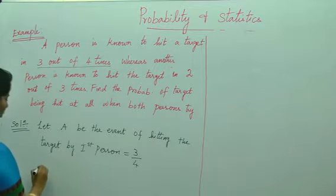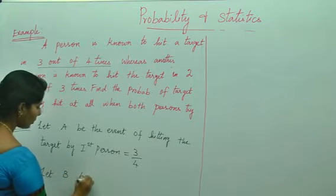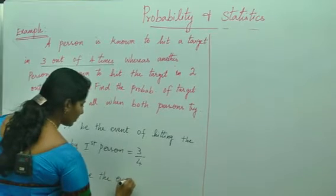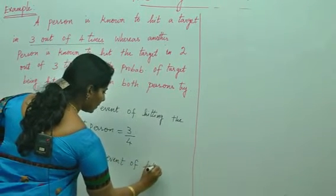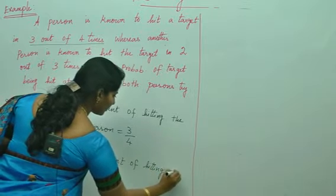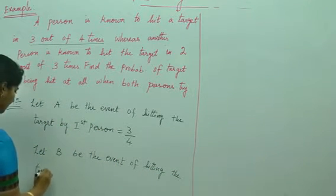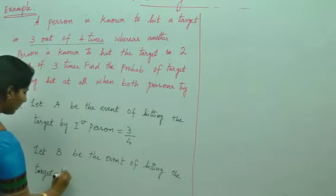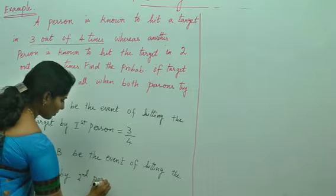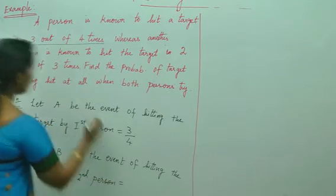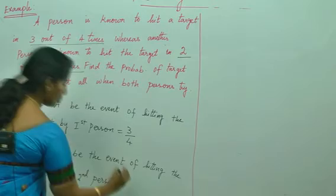Next one, what they have given? Let B be the event of hitting the target by second person. What they have given? 2 out of 3 times, so 2 by 3.